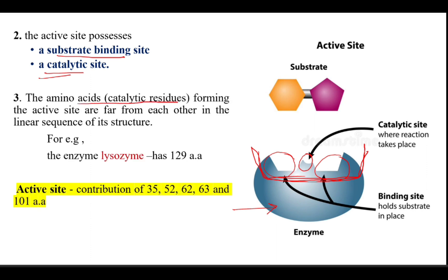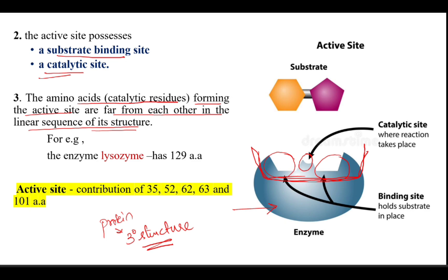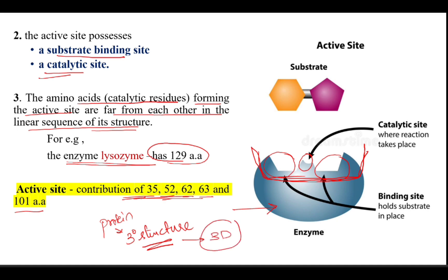The amino acids or catalytic residues forming the active site are far from each other in the linear sequence but come together in the tertiary structure. Enzymes are protein in nature and have a tertiary structure, and the amino acids contributing to the active site are not linearly arranged. For example, the enzyme lysozyme has 129 amino acids, but the amino acids at positions 35, 52, 62, 63, and 101 contribute to form the active site. This happens because of the 3D conformation of the tertiary structure of the protein.